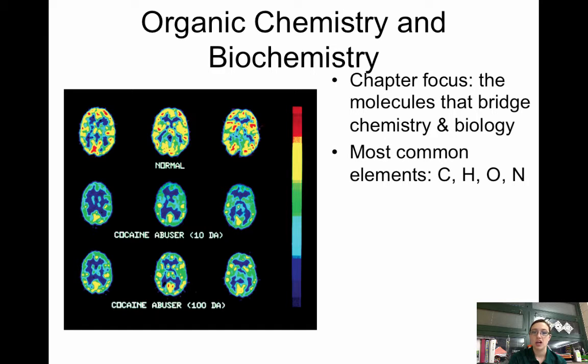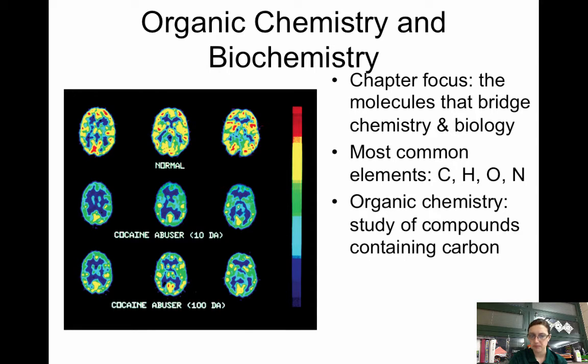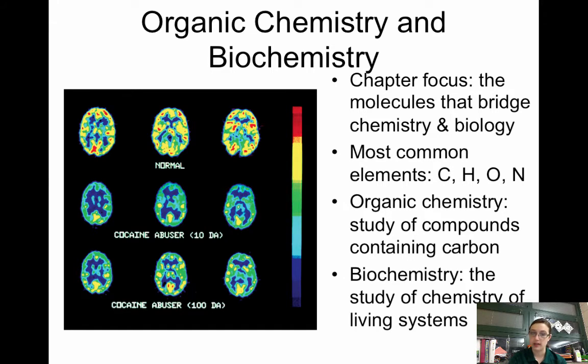So the most common elements in both organic and biochem are carbon, hydrogen, oxygen, and nitrogen. And organic chemistry, which is what we're looking at, is simply the study of compounds containing carbon. Biochemistry, though, is the study of chemistry of living systems. So you might look at proteins, you might look at carbohydrates in biochemistry, where in chemistry we are only focusing on compounds that contain carbon.